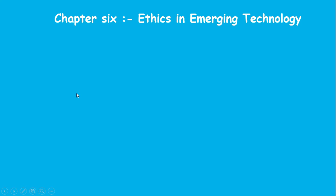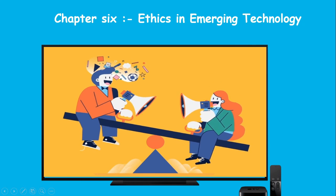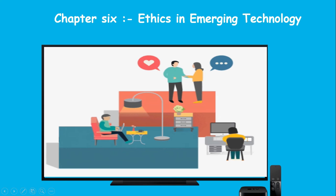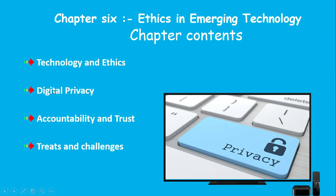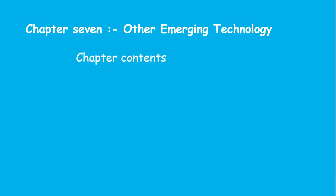Chapter six is Ethics in Emerging Technology. Technology is a good thing, but the chapter addresses digital privacy, accountability, and professional ethics. This chapter covers the rules and guidelines around emerging technology.